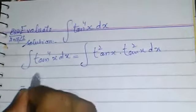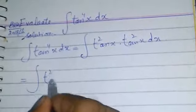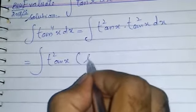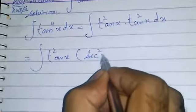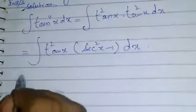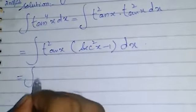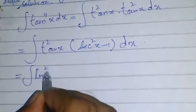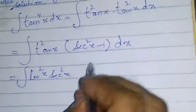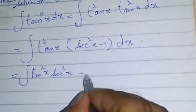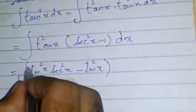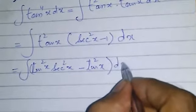We can write it as tan squared x into secant squared x minus 1 into dx, or we write it as tan squared x secant squared x minus tan squared x into dx.